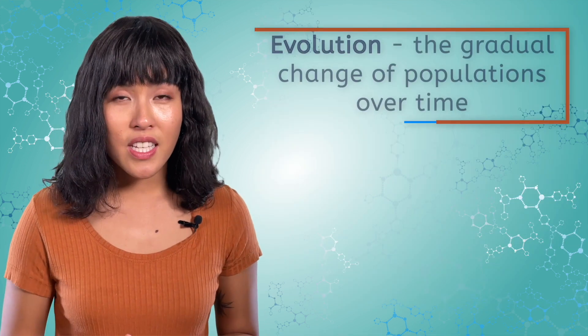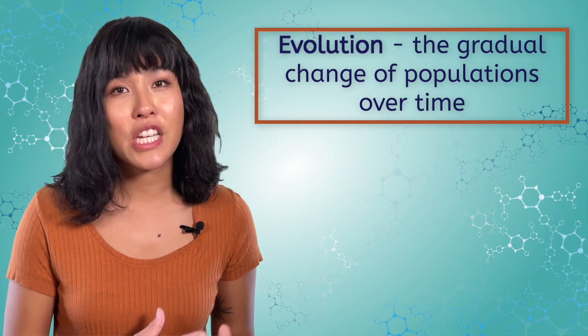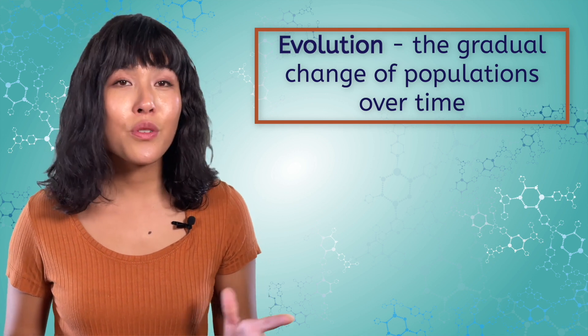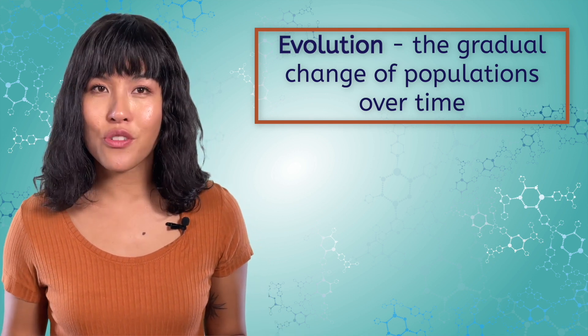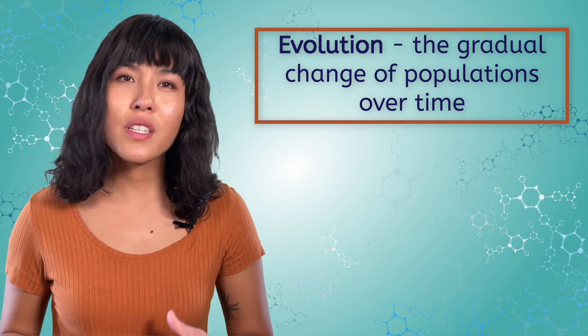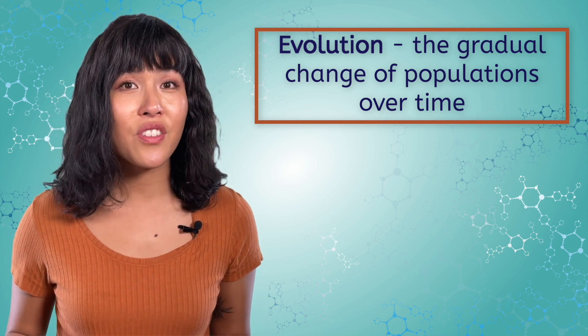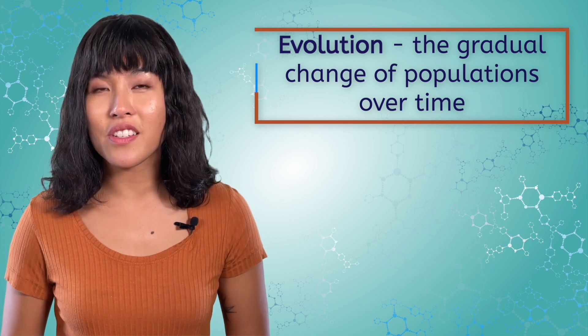Evolution is the gradual change of populations over time. It includes speciation, often through isolation and natural selection. But those are only some of the ways in which a population can change, and we'll talk about other changes later in the course. Because evolution involves very slow changes, most of which happened millions of years ago, how can we possibly study it to learn about the history of life on Earth?